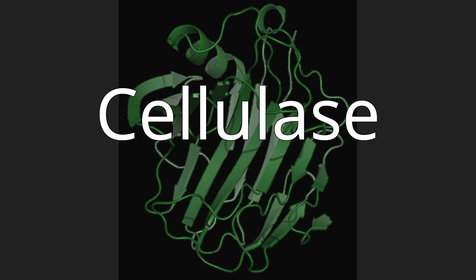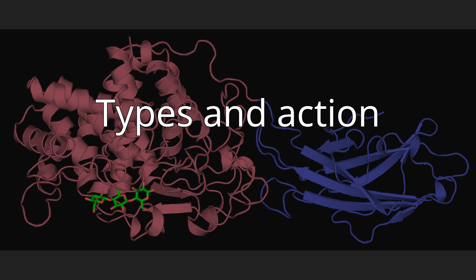There are 5 general types of cellulases based on the type of reaction catalyzed. Endocellulases (EC 3.2.1.4) randomly cleave internal bonds at amorphous sites that create new chain ends.